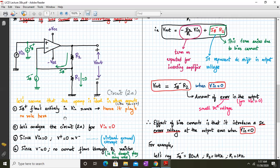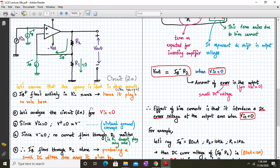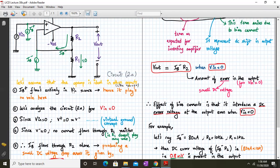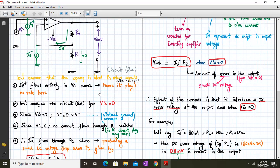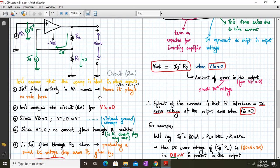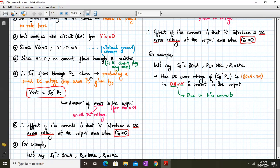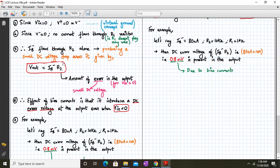So let's analyze the circuit for Vin equal to 0. For Vin equal to 0, V plus is equal to 0 and that will be equal to V minus because of virtual ground concept. Now since V minus is 0, no current flows through R1 resistor. So current Ib minus flows through resistor R2 alone, producing a small DC voltage drop across it. So the output voltage is given by Ib minus into R2. So this is the amount of error which is present in the output for Vin equal to 0.